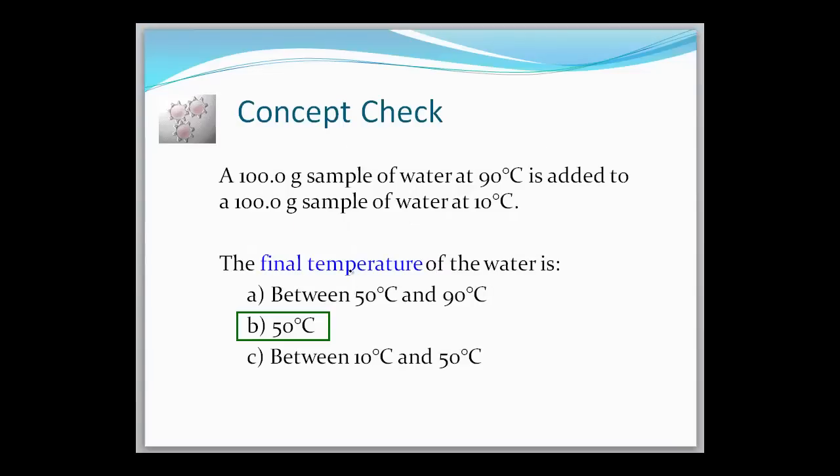Okay, before we start doing the calculations, let's take a look at an example problem. You've got a 100 gram sample of water at 90 degrees Celsius and a 100 gram sample of water at 10 degrees Celsius. The final temperature of the water is going to be what? Now since it's the same mass and the same compound, that temperature is simply going to be the mean or the middle between 90 and 10. And if you were to do that, you would calculate or you would find out that it's 50 degrees Celsius.